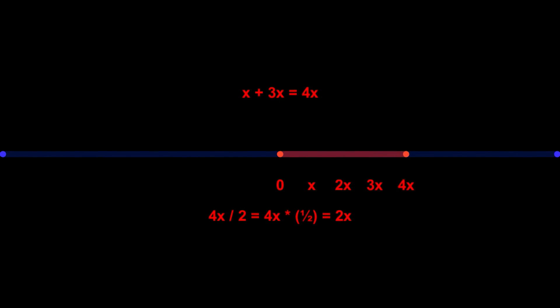Something like 4 times x will make the line 4 times as long as its length at that time. This corresponds to the formula x plus 3x equals 4x. Something like divide by 2 will cut the length of the line at that time in half. This corresponds to the formula 4x divided by 2 equals 2x and is equivalent to 4x times half equals 2x.